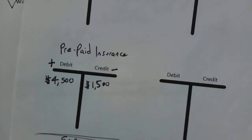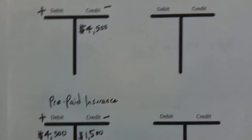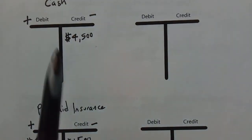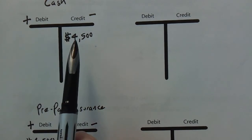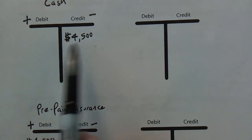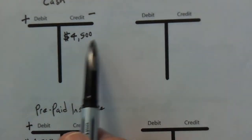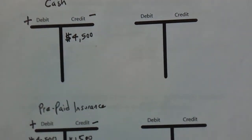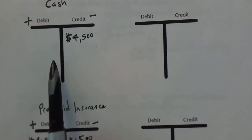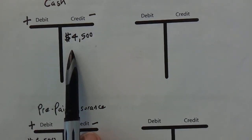There's no entry on January 31st regarding cash — that's already occurred. So we don't need to worry about that anymore. We don't want to take that money out again.